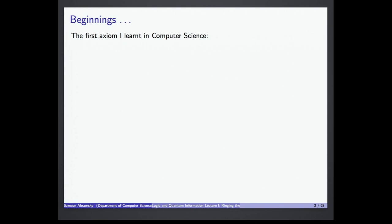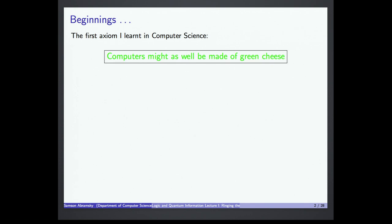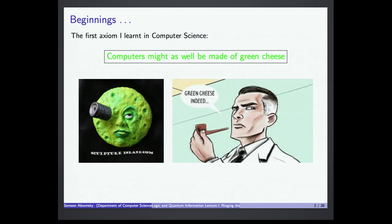I heard an axiom of computer science quite early on from my advisor, which is that computers might as well be made of green cheese. The moon is notionally, fancifully made of green cheese. The point is it doesn't really matter what computers are made of. Our concerns — thinking about software, thinking about logic of computation — are quite independent of all of that. So computers might as well be made of green cheese. We can ignore the physical realization of computers and just treat them as logical abstractions.